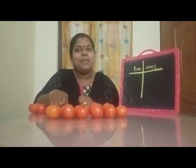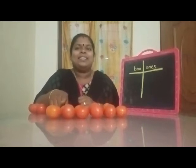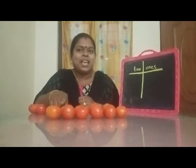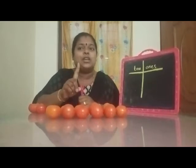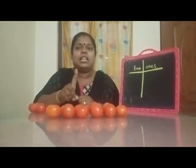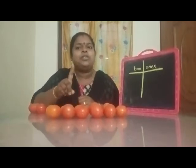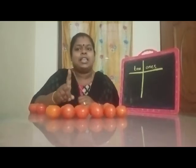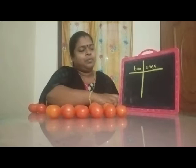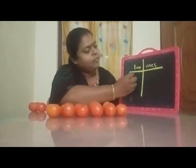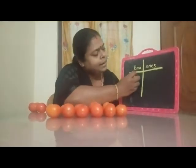Now let's make a group of 10. This is our group of 10 — 10 tomatoes. Now tell me how many groups we have. Yes, we have 1 group of 10. So 10 tomatoes, and now we write 1.